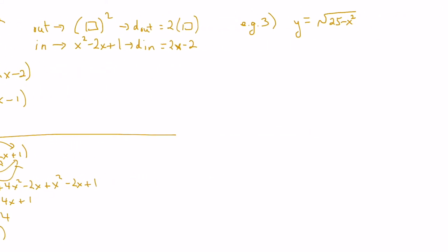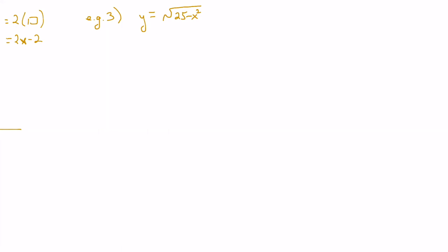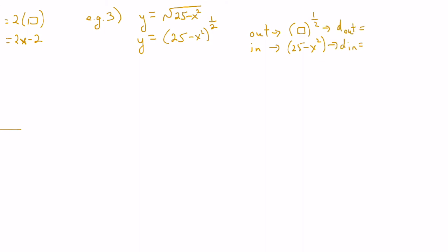Let's finish with one more example. We have y equal to the square root of 25 minus x squared, which we rewrite as y equals 25 minus x squared all to the 1 half. The outside function is the brackets to the 1 half, and the inside function is 25 minus x squared. The derivative of the outside function is 1 half times the bracket to the negative 1 half, and the derivative of the inside function is negative 2x. Applying the chain rule, our derivative is 1 half times 25 minus x squared to the negative 1 half, times negative 2x.